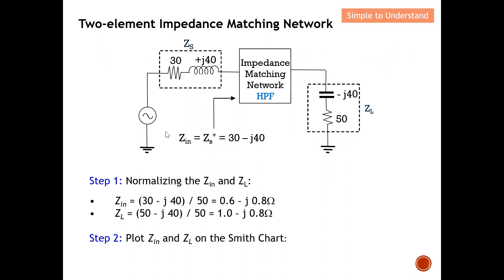Z_in is the complex conjugate of the source, which gives us 30−j40 ohms. This is the point to plot on the Smith chart, not Z_source itself. Z_load is 50−j40 ohms. Normalizing both against 50 ohms: Z_in becomes 0.6−j0.8, and Z_load becomes 1−j0.8.